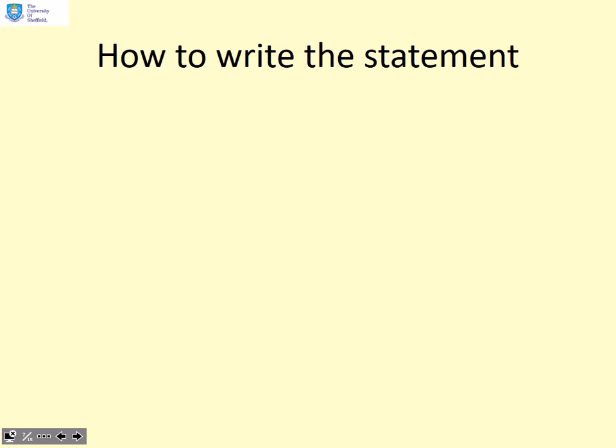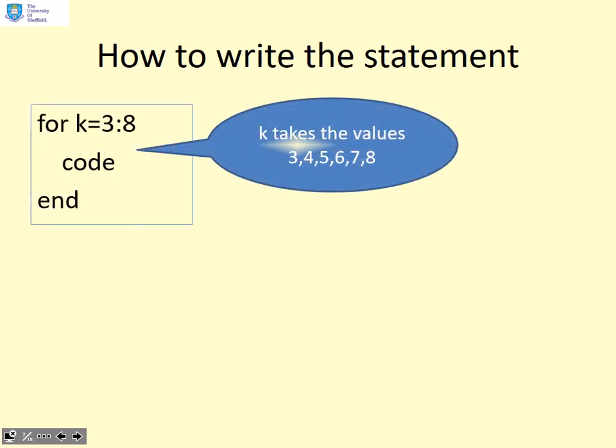So how do we write the statement? Here's an example. For k equals three colon eight, code that we want to operate, end. What that will do is take the values k equals three, four, five, six, seven, eight. So that loop will run six times with the six different values of k.